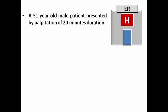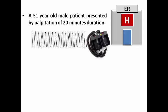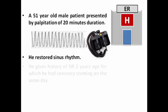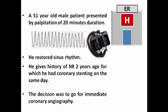Our patient is a 51-year-old male who presented to the ER with palpitations of 20 minutes duration. His ECG showed evidence of regular wide-complex tachycardia suggestive of ventricular tachycardia, so a synchronized DC shock was given after sedation. The patient restored sinus rhythm and mentioned a history of MI two years ago for which he had coronary stenting, so the decision was to go for immediate coronary angiography.